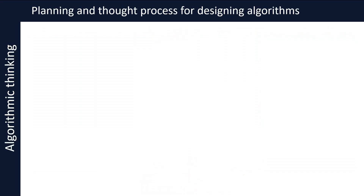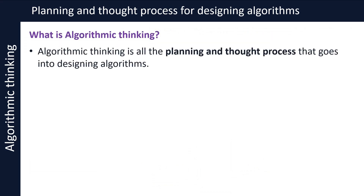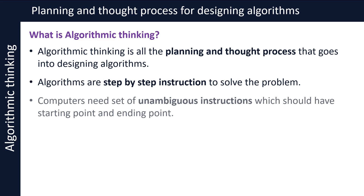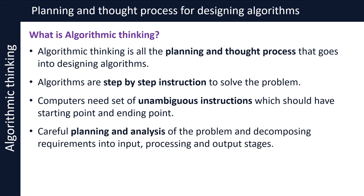Let's now focus on algorithmic thinking. What is algorithmic thinking? Algorithmic thinking is all the planning and thought process that goes into designing algorithms. Algorithms are step-by-step instructions to solve the problem. To tell a computer to do something, you need a set of unambiguous instructions which should have a starting point and an ending point. Before jumping to write a program, you need to spend time on designing the solution.